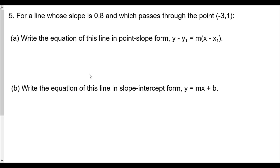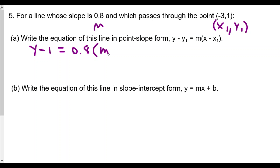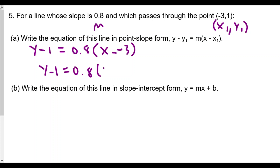Question five: for a line whose slope is 0.8 and which passes through the point negative three, one, write the equation in point-slope form. Here x1 equals negative three, y1 equals one, and slope m equals 0.8. Plugging in: y minus one equals 0.8 times the quantity x minus negative three, which simplifies to y minus one equals 0.8 times the quantity x plus three. That is our equation in point-slope form.